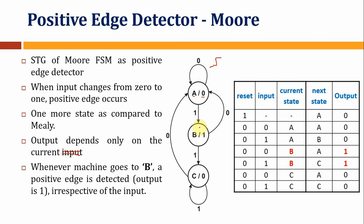In state B, the output is 1. The state B is reached when there is a positive edge. The output will be 1 as long as we are in state B.